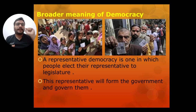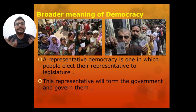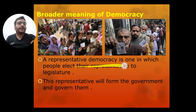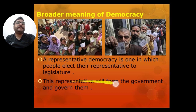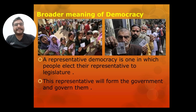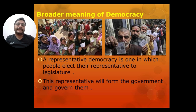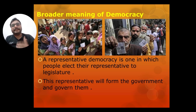Now the broad meaning of democracy. Representative democracy is one in which people elect their representatives to the legislature — the part of government where laws are made. These representatives form the government and govern the people. So basically, democracy is a system where people elect their representatives and send them to the legislature.